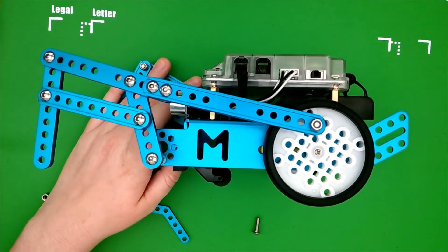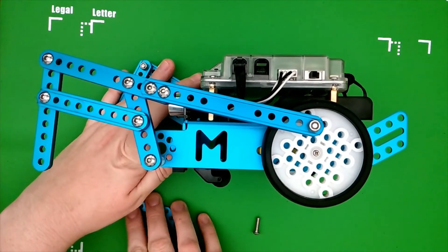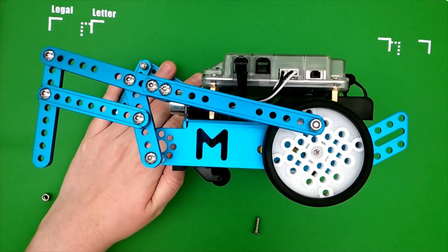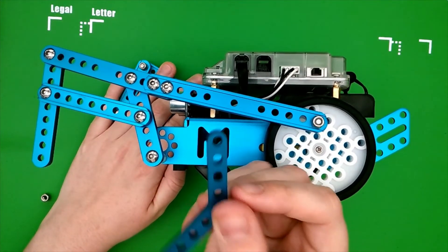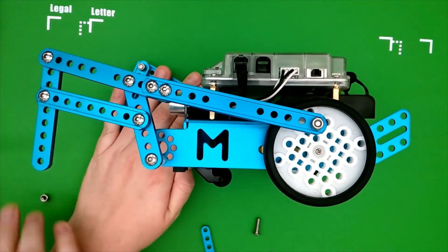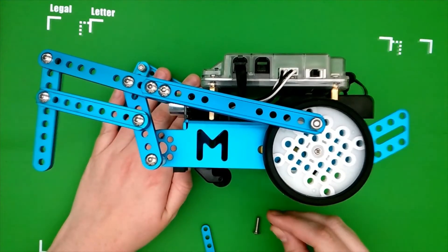Okay, so next is step six. We're going to finish this side of the robot. So we're going to take a 45-degree blue plate, a lock nut, and a 14-millimeter screw.